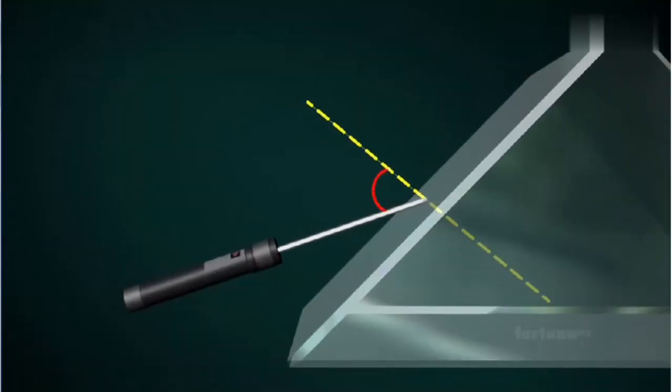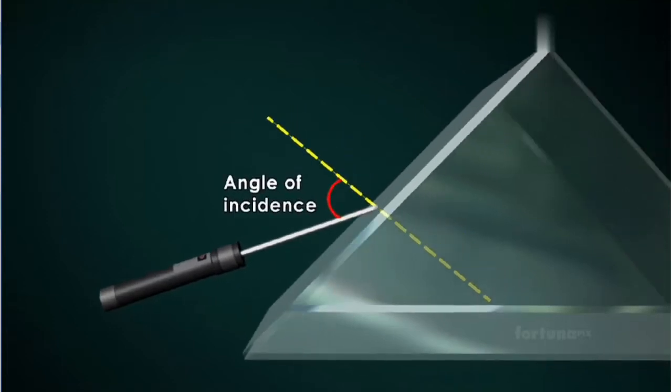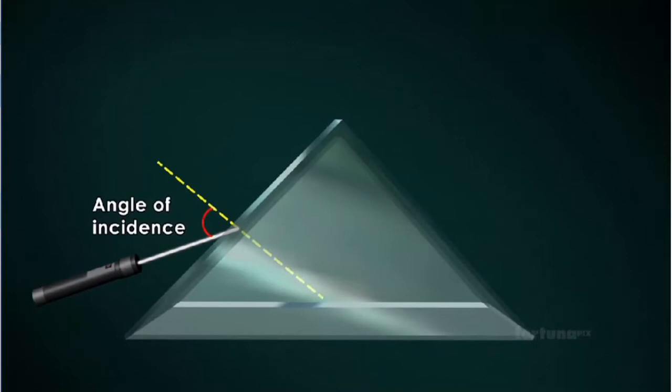The angle between the incident ray and the normal is called the angle of incidence inside the prism. The light ray will bend towards the normal at an angle and will continue to strike on the other face of the prism.